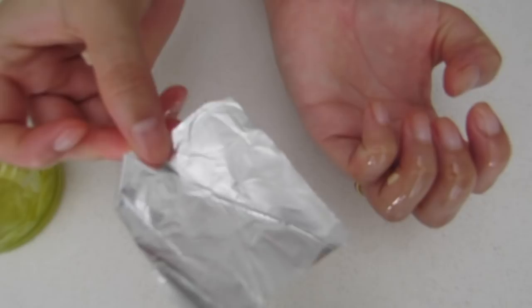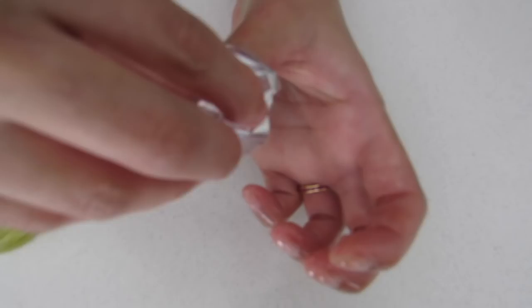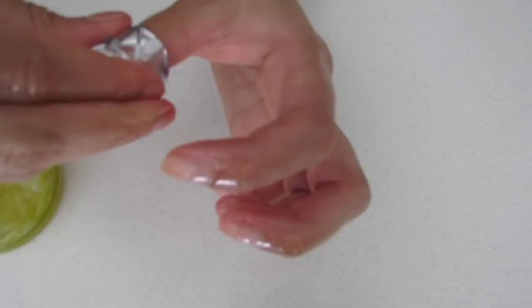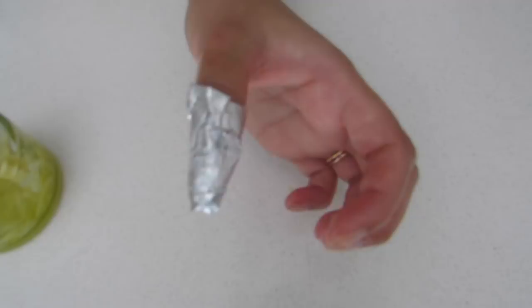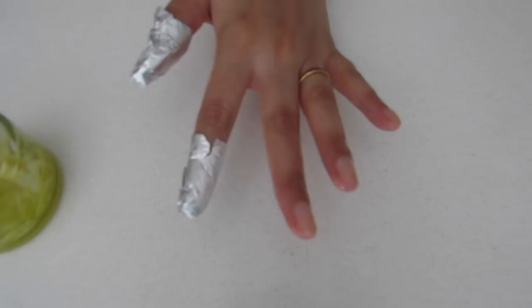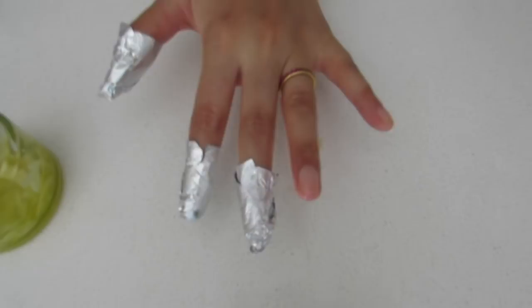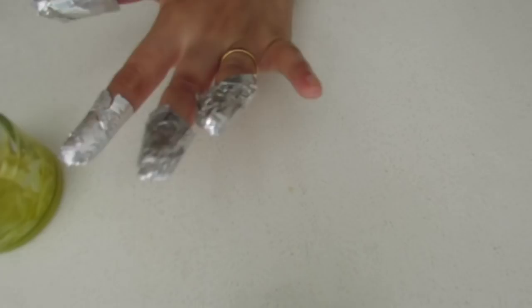Now take the aluminum foil that we had cut earlier and wrap it one by one around all of your nails. This method helps to make sure that the garlic oil is well absorbed into the cuticles of the nails, helping them to grow much faster than the normal rate. After wrapping the nails, let it sit there for around 30 minutes. In this time you can do whatever you want, like watch TV or read a book or anything. This procedure is not going to take up your time at all.